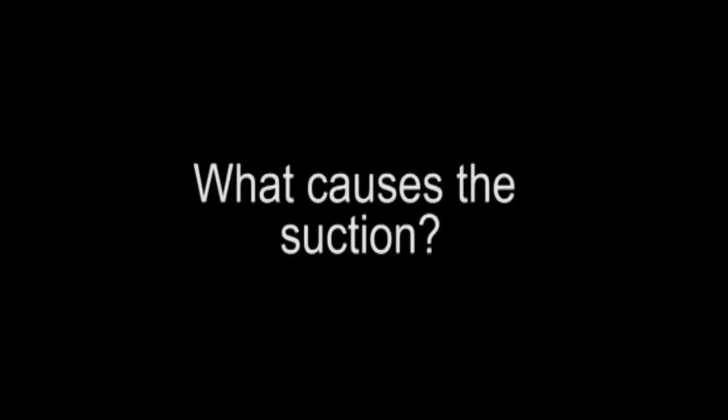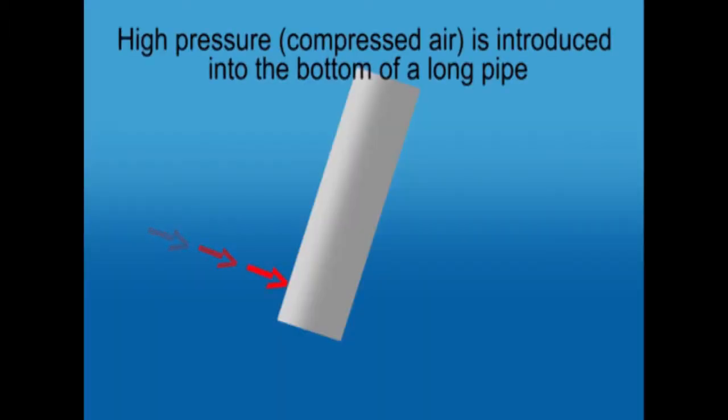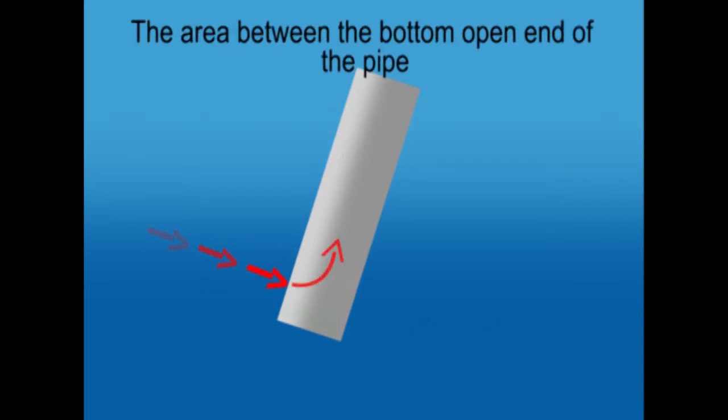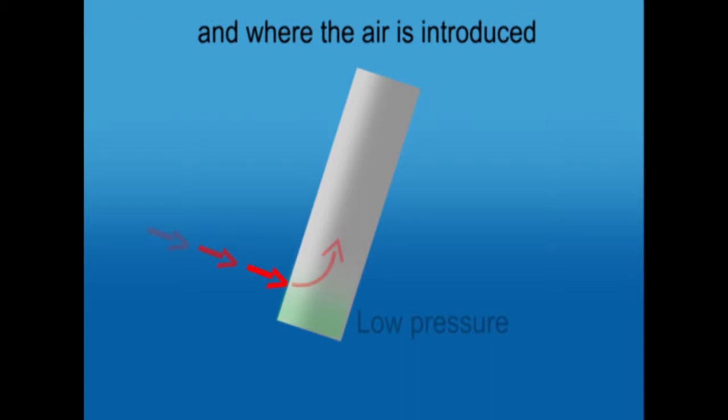What causes the suction? High pressure compressed air is introduced into the bottom of a long pipe. The air is drawn up the tube. The area between the bottom open end of the pipe and where the air is introduced becomes an area of low pressure.